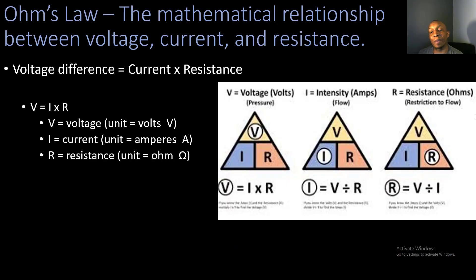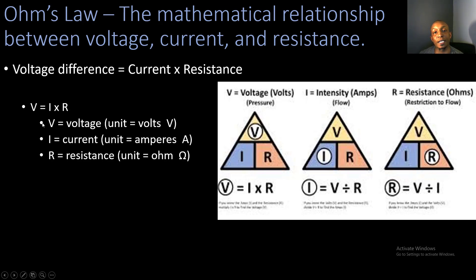Now let's take a look at Ohm's Law, which is the mathematical relationship between voltage, current, and resistance. Our formula is: voltage equals current times resistance, often written as V = I × R.